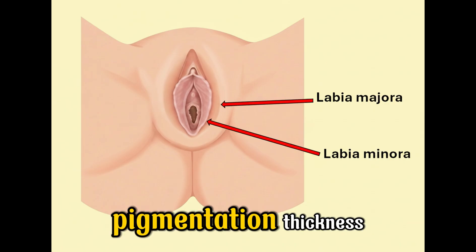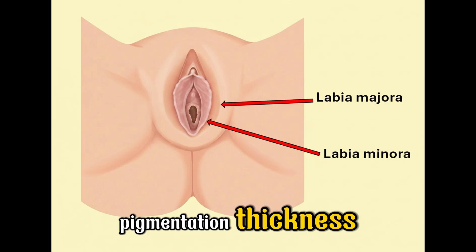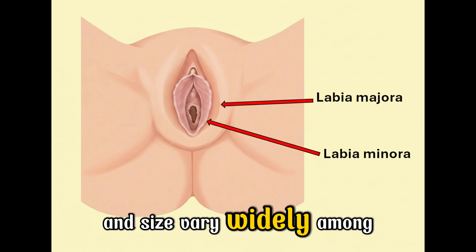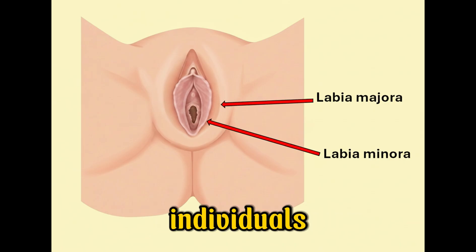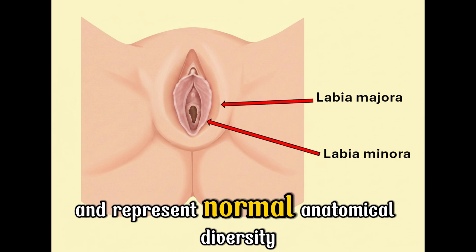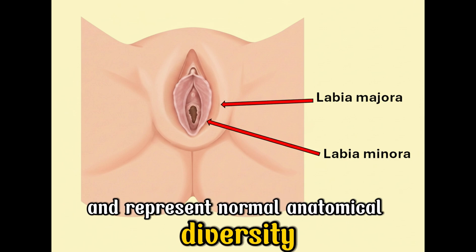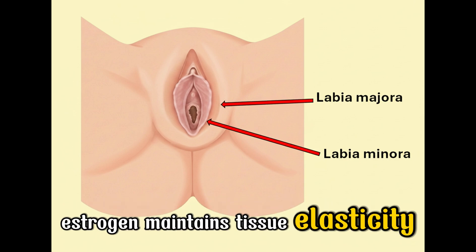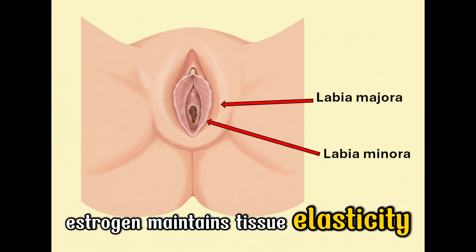Pigmentation, thickness, and size vary widely among individuals and represent normal anatomical diversity. Estrogen maintains tissue elasticity.